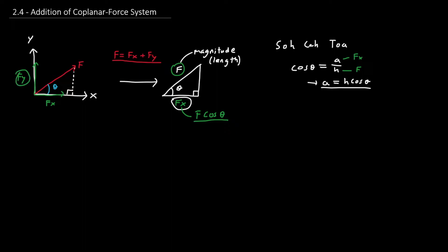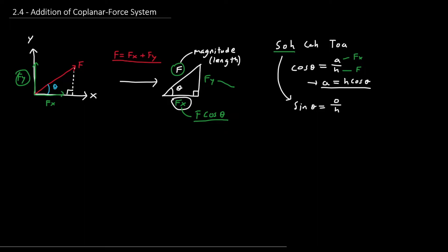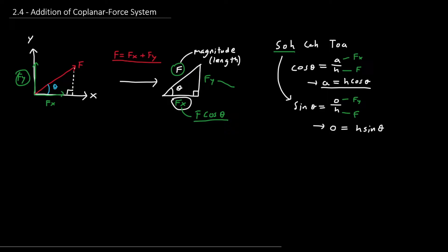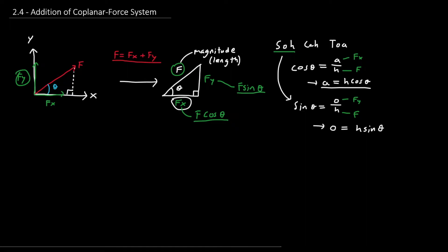Now solving for Fy, we know that Fy is opposite to the angle theta. So we use sine, since sine theta equals the opposite over the hypotenuse. The opposite is Fy and the hypotenuse is F. Solving for the opposite, we get h sine theta. So Fy equals F sine theta, which is the y component of the force.